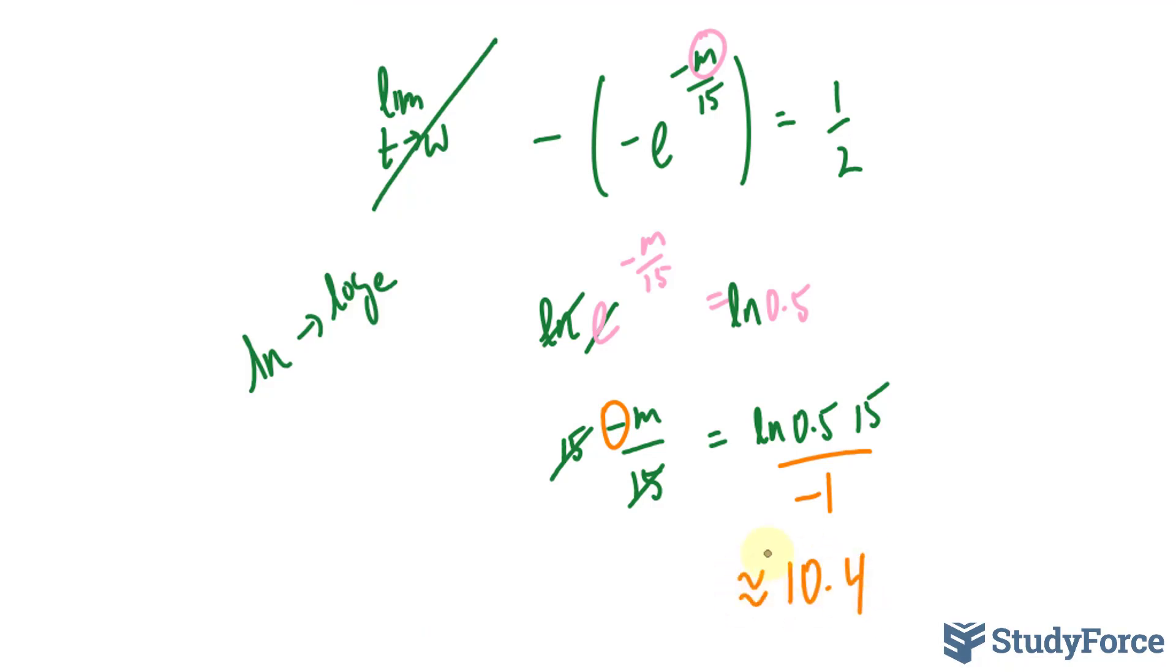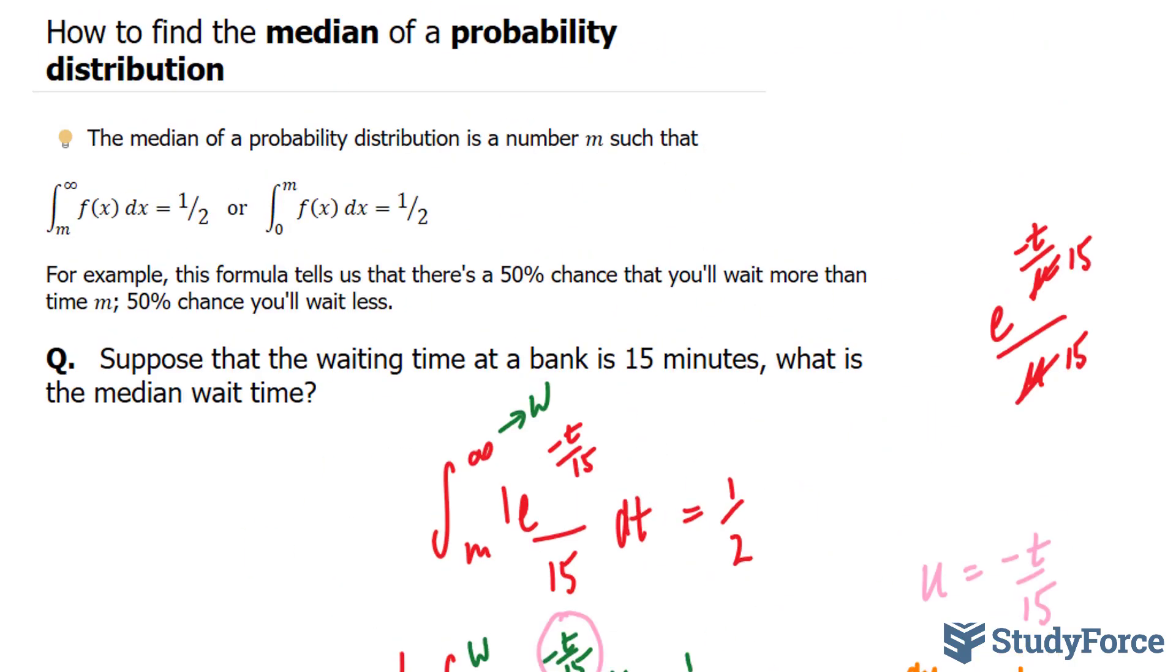This is the median wait time. Therefore, 50% will wait more than 10.4 minutes and 50% will wait less. And there you have it. That is how to find the median of a probability distribution.